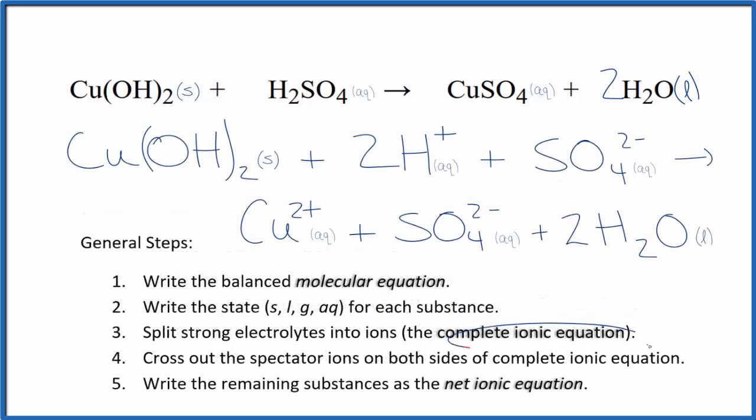Now that we have the balanced complete ionic equation, we can cross out spectator ions. They're on both sides of the complete ionic equation. In our reactants here, I can see that we have this sulfate ion SO4 2- and then in the products we have the sulfate ion. That's a spectator ion. We cross that out. But everything else is unique.